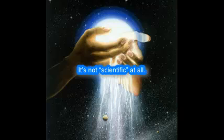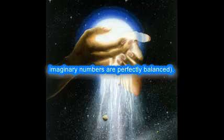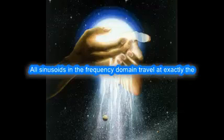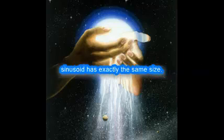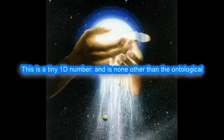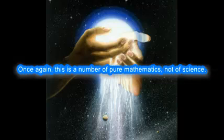In natural units, it is simply one, since real numbers and imaginary numbers are perfectly balanced. All sinusoids in the frequency domain travel at exactly the same speed, and that means that the flowing point in every sinusoid has exactly the same size. This is a tiny 1D number, and is none other than the ontological Planck constant. Once again, this is a number of pure mathematics, not of science. The flowing point is the basic particle and is the smallest possible size of a particle.